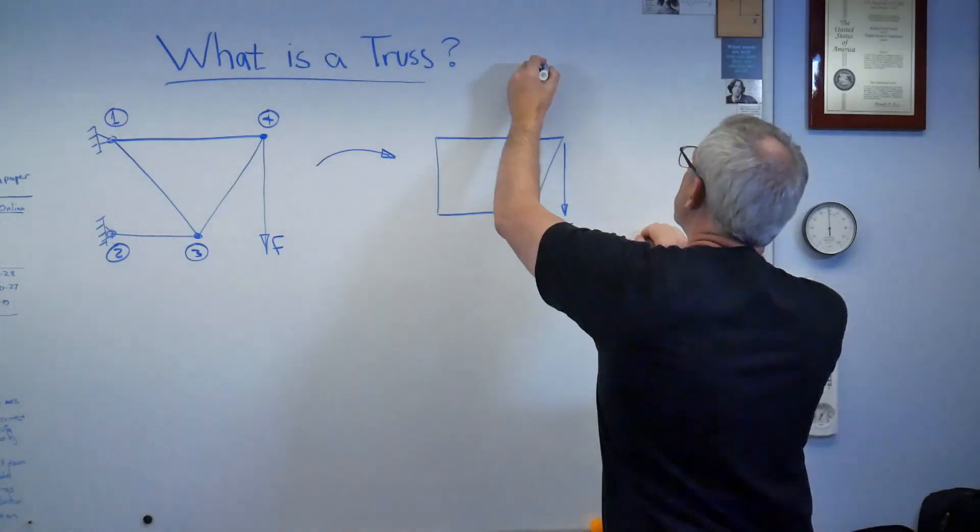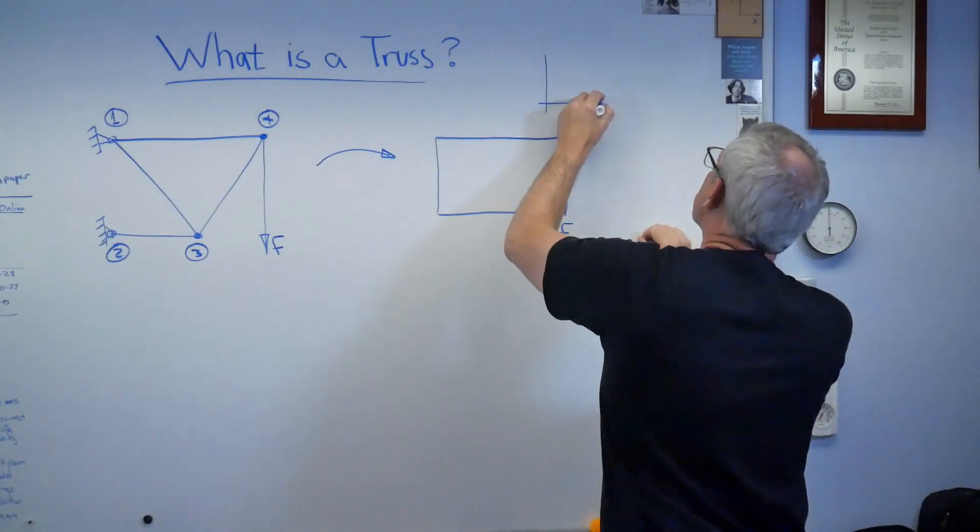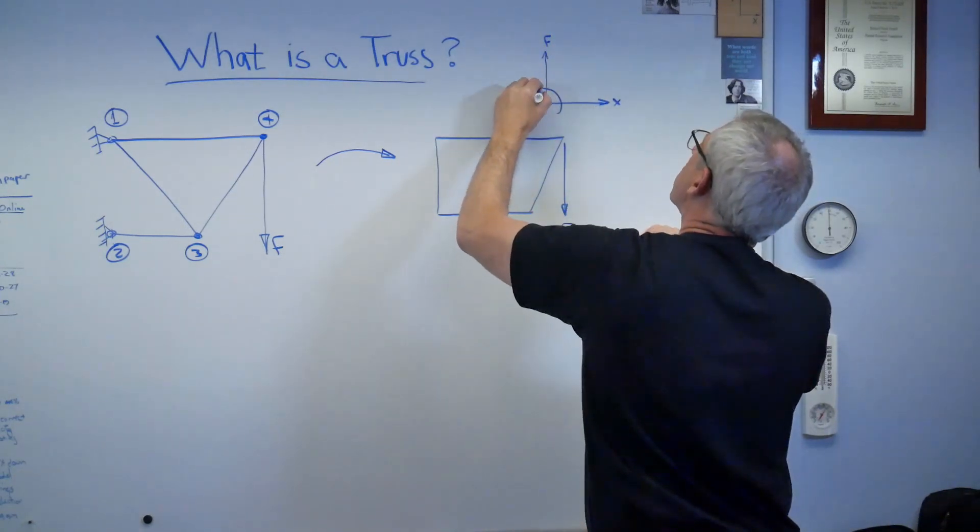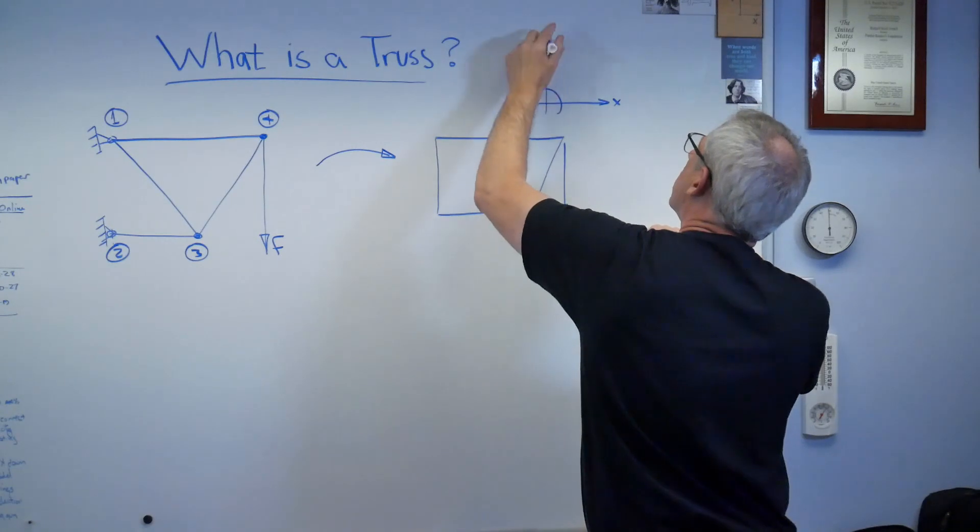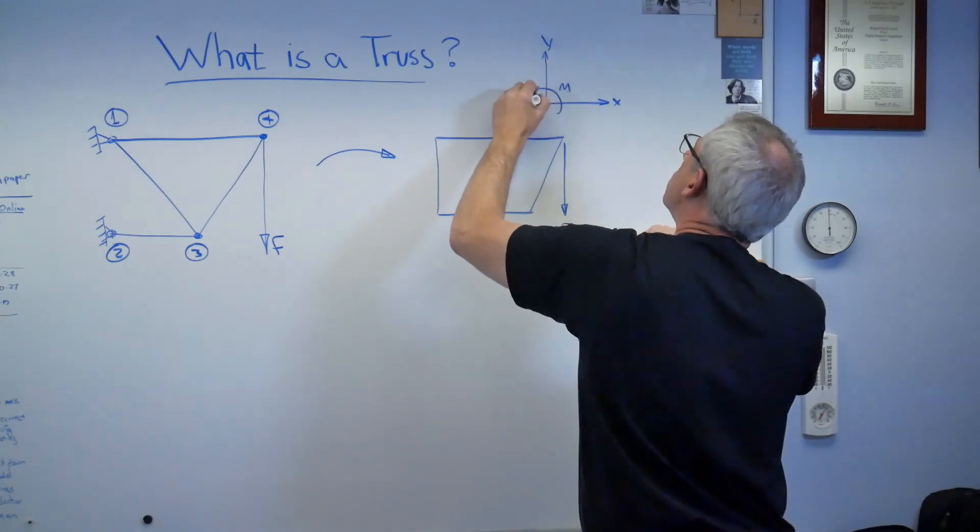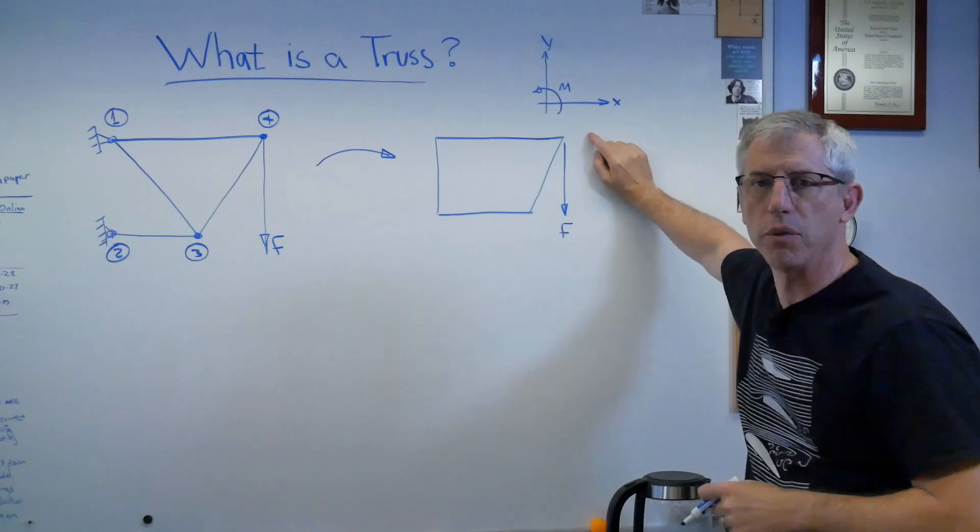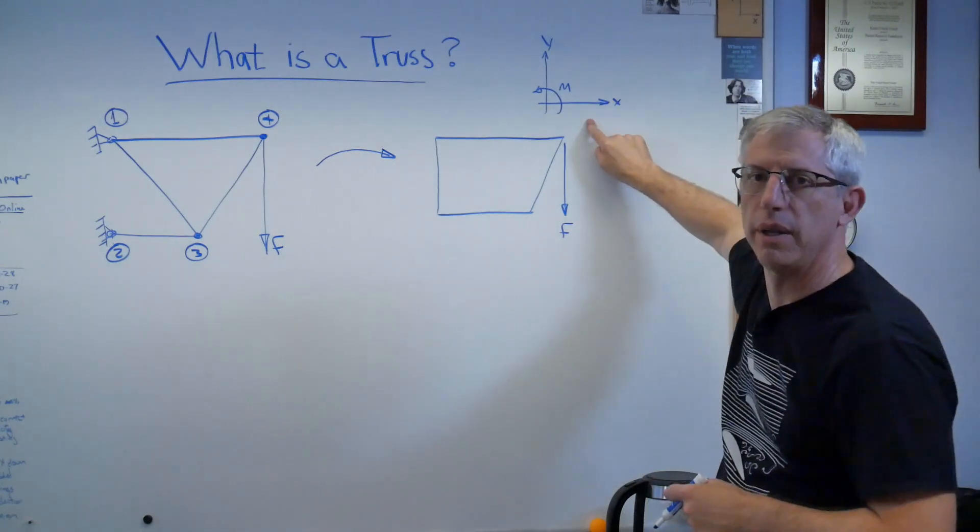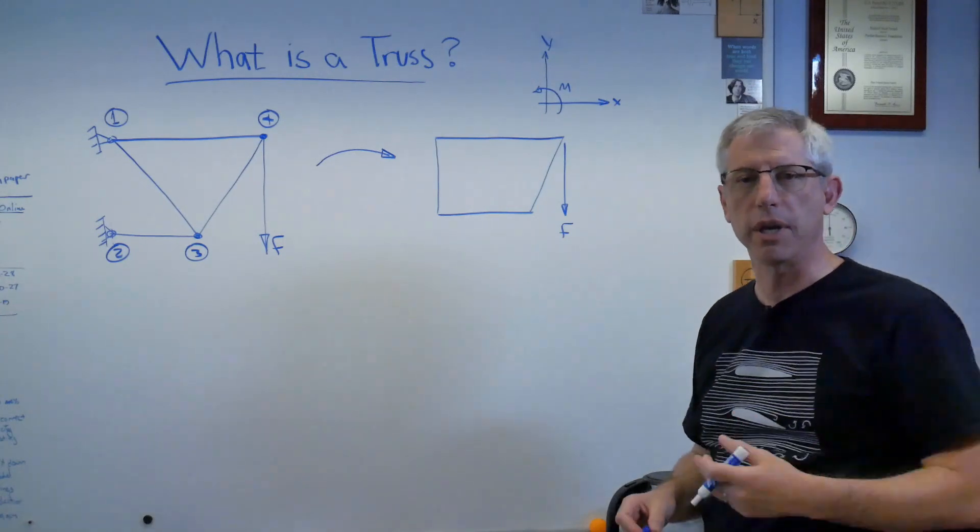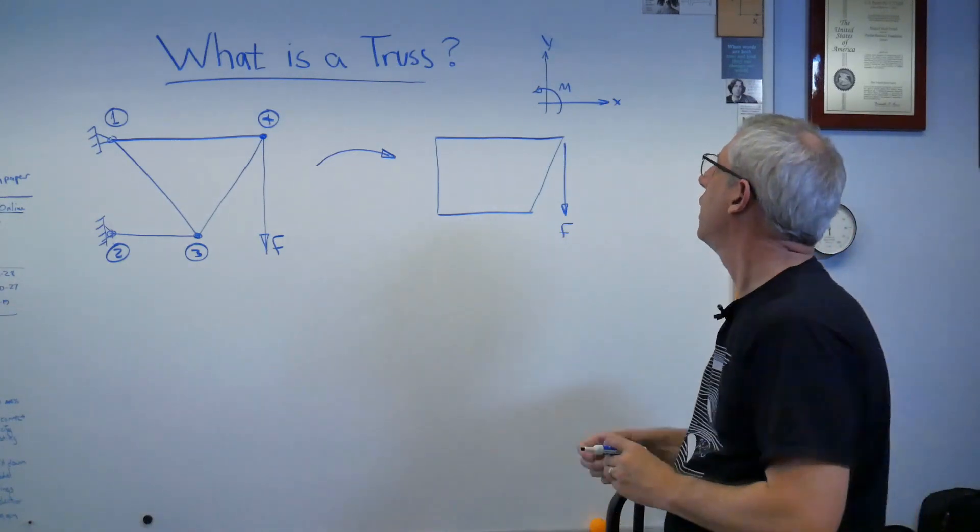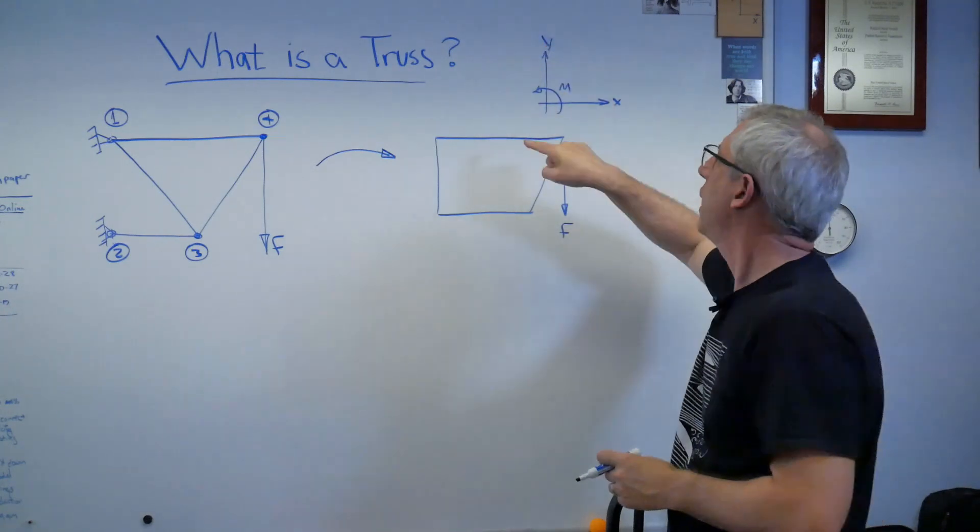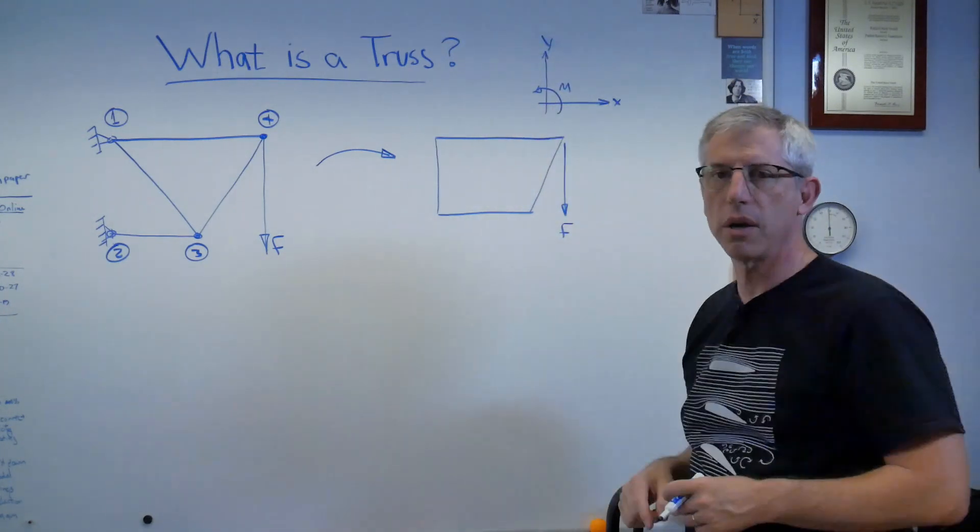Now, before I get too far, if I'm going to write equations, I got to have a coordinate system. If you don't know what else to do, use this for a coordinate system. There are reasons to use other coordinate systems, and if you have one of those reasons, that's fine. But if you don't have a reason, use this one. If you do the same thing every time, you tend to mess up less, or at least I do.